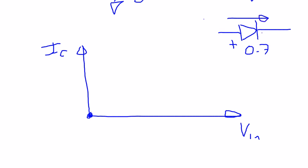Similarly, the base of the transistor also has a forward voltage. So until we reach that forward voltage — maybe it's about 0.7 volts, it can vary — nothing's going to happen, because it's going to need at least more than 0.7 volts to turn on that base.